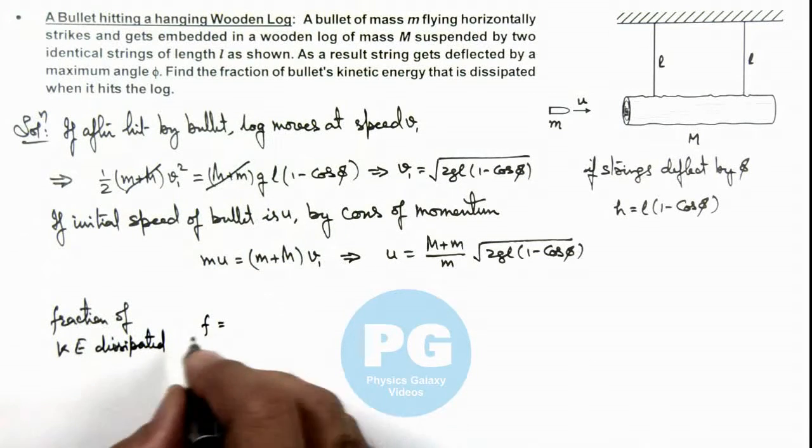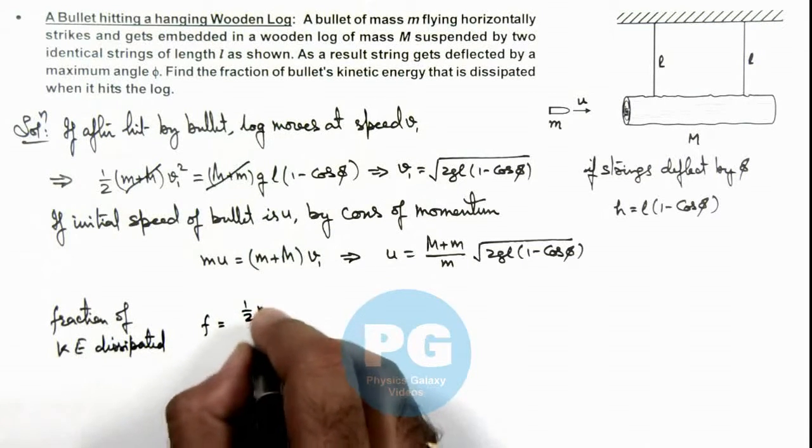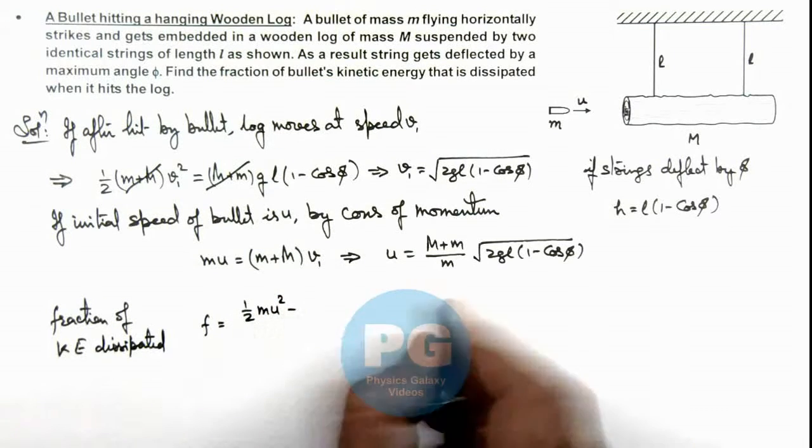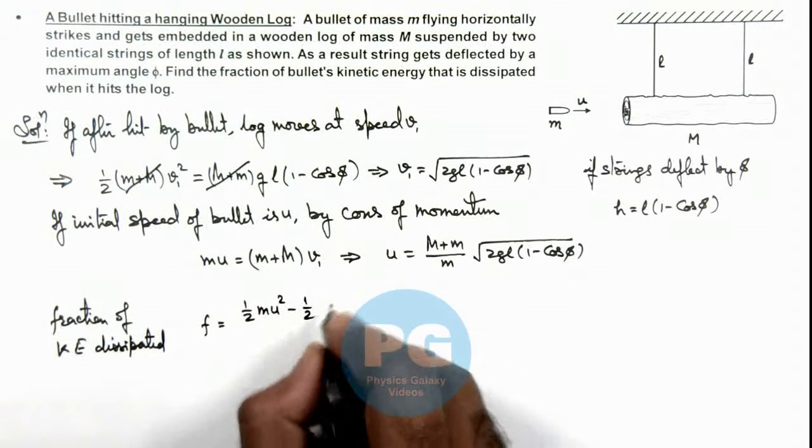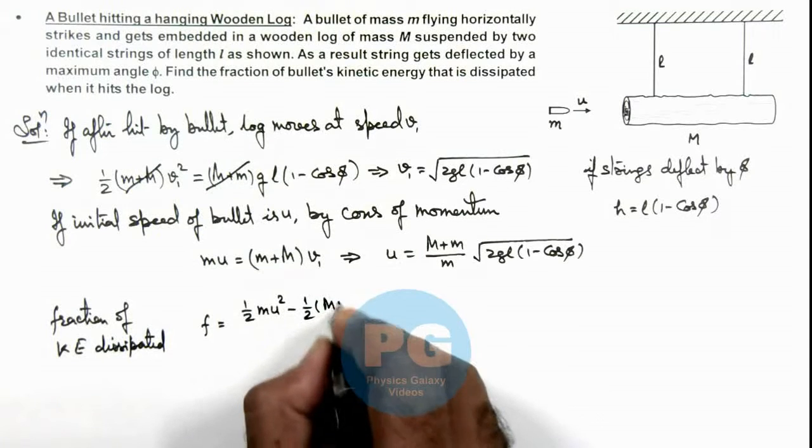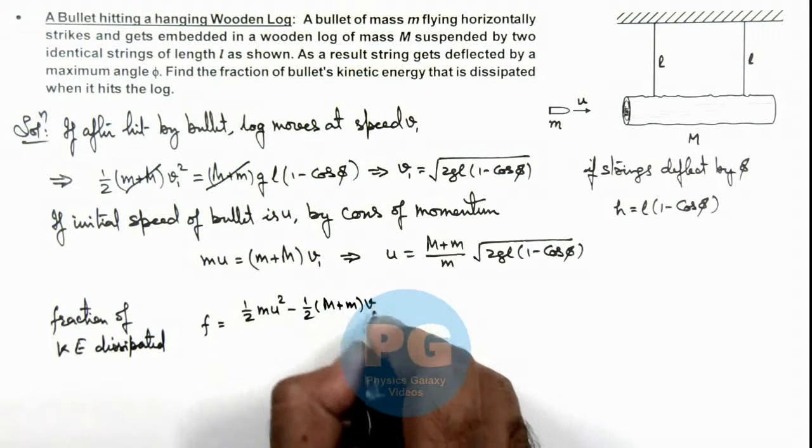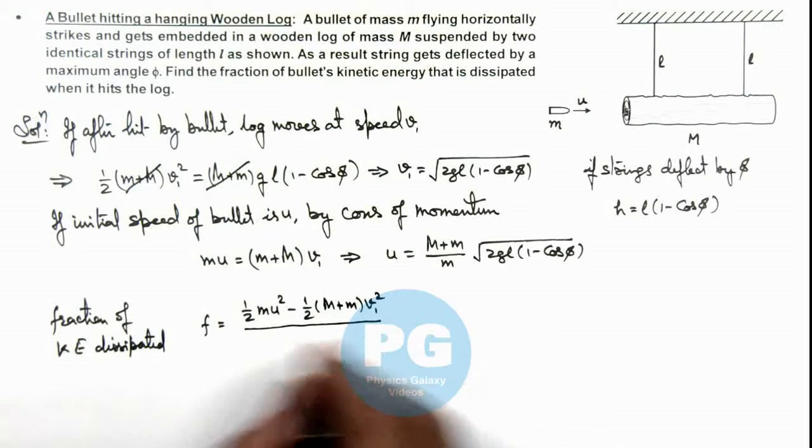Can be given as the initial kinetic energy ½mu² minus the final energy of the system ½(m + M)v₁², divided by the initial kinetic energy, the total kinetic energy.